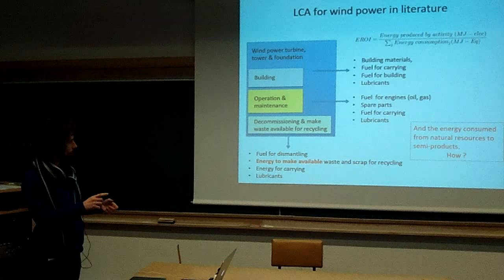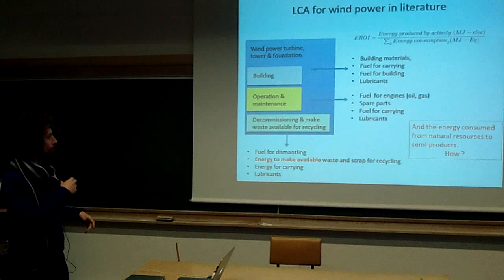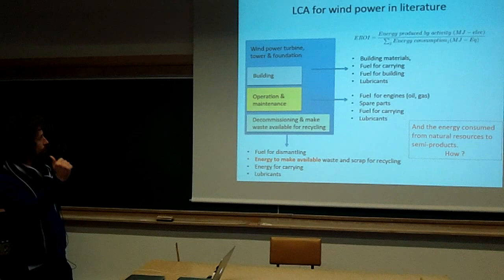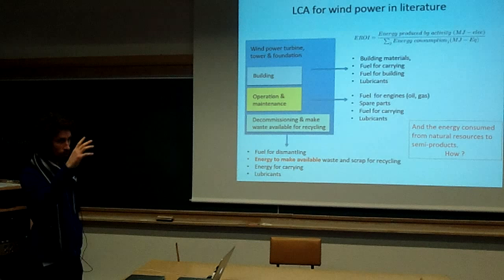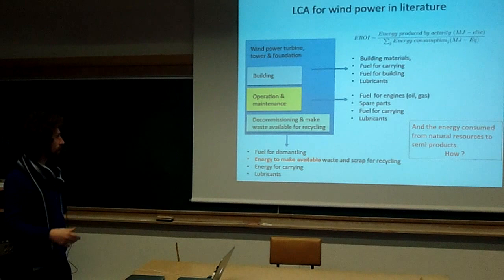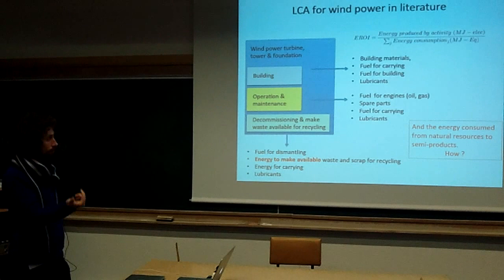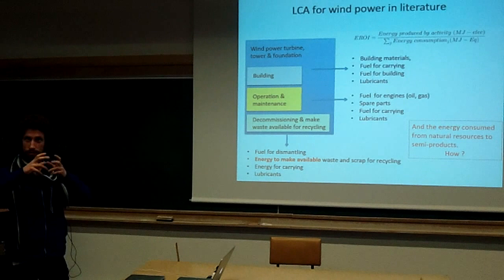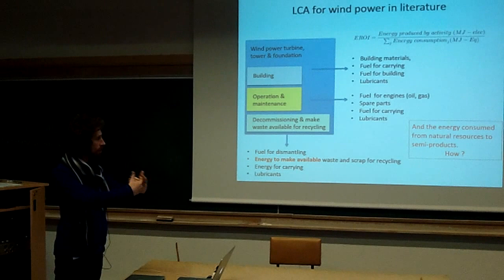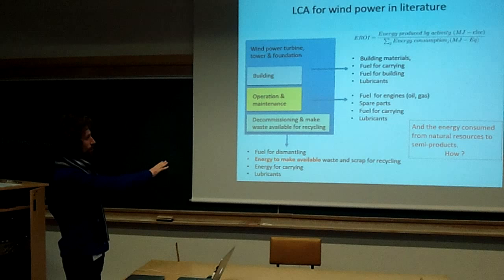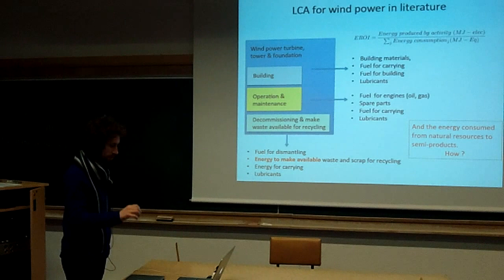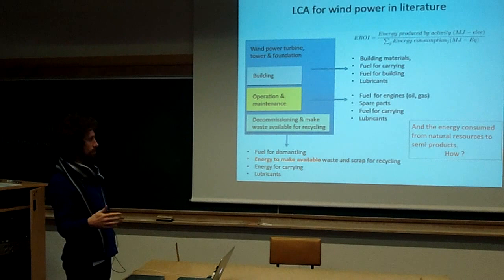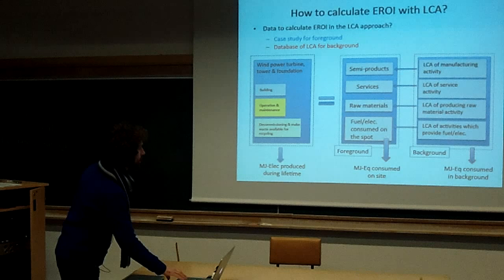The methodology clearly covers wind power. We consider building, operation, maintenance, and decommissioning — and making available for recycling and treatment — for wind power turbine, tower, and foundation. So we take into account building materials, fuel for carrying buildings, fuel for engines, trucks, oil and gas, spare parts when parts of your wind turbines fail, and also the energy to make available waste and scrap. It's not in the philosophy of life cycle assessment to dismantle your turbines and just leave scrap and waste on the spot. You have to make them available for treatment, but we don't take into account the treatment of scrap and waste in the life cycle assessment. And all the energy consumed from natural resources to semi-products has to be taken into account.